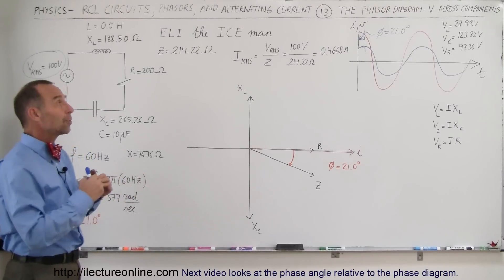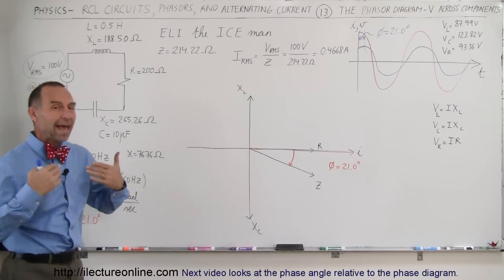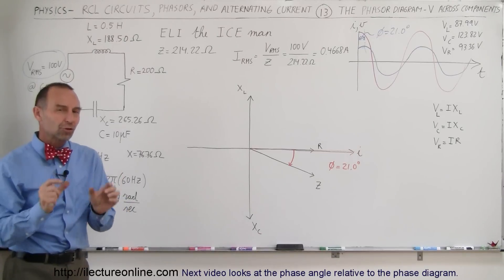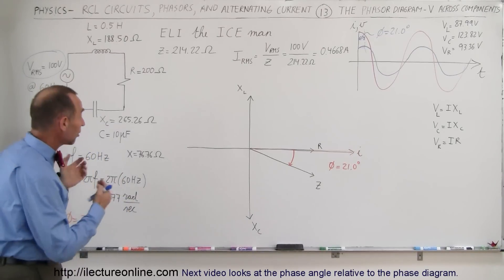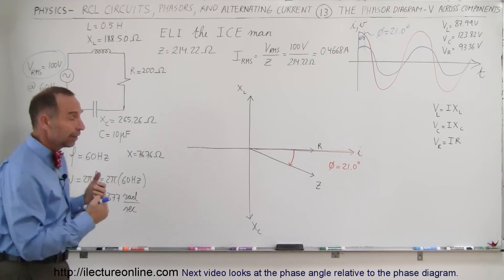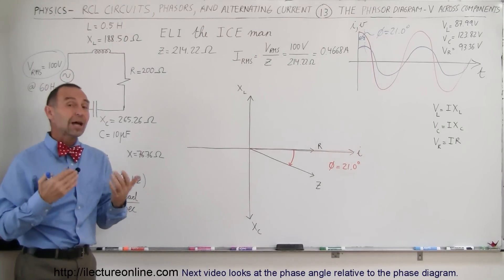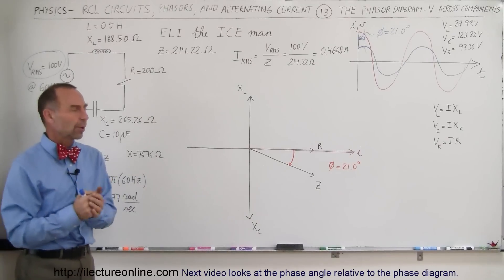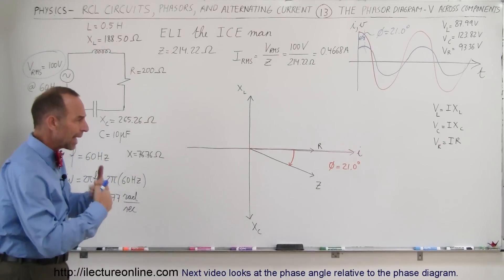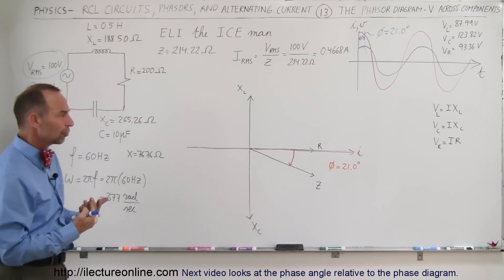Welcome to ElectronLine. We're going to learn how to add up the voltages across each of the three components in an RCL circuit, since we now know that they're going to be out of phase with one another. So how do we add up the voltages?